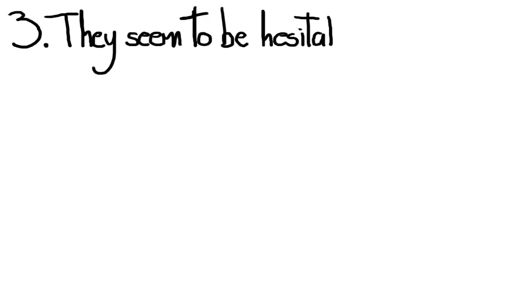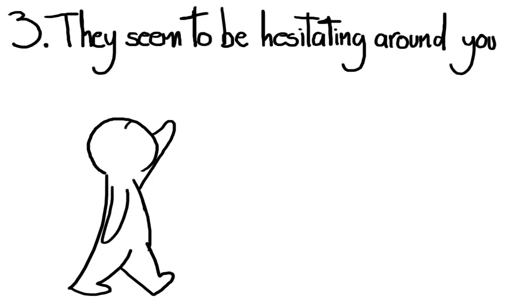Three: They seem to be hesitating around you. If an ambivert ever seems to be fluctuating in the attitude with which they approach you, this might be why.